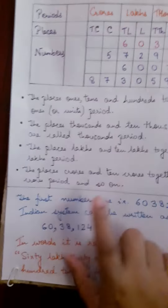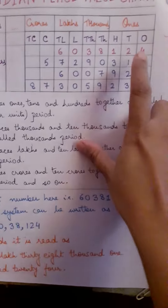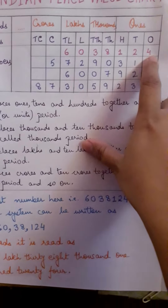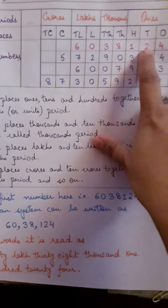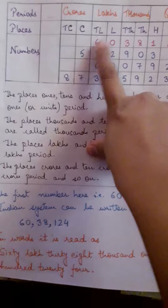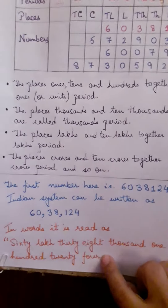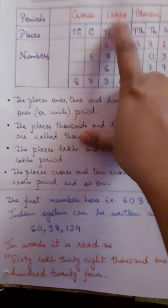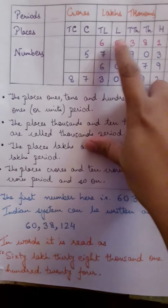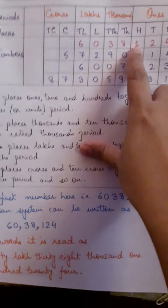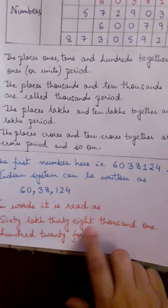For writing a number in the place value chart, we start from the right-hand side. For example, 4,218,306 — here 60 comes under the lakhs column, so 60 lakh; 38 comes under thousands, so 38 thousand; giving us 60 lakh 38,124.